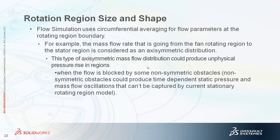Flow Simulation uses circumferential averaging over the rotating region boundary. For example, the mass flow rate going from the fan rotating region to the stator region is treated as an axisymmetric distribution. This type of axisymmetric mass flow rate can produce unphysical pressure ranges when flow is blocked by non-symmetric obstacles. Time-dependent static pressure and mass flow oscillations cannot be captured by the stationary rotating region averaging technique, which is one of the limitations of this approach.